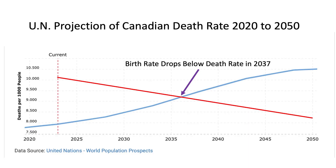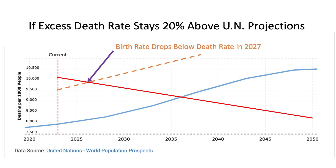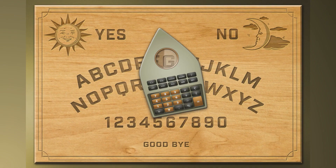Remember when I said if the UN projected death rate was accurate, the death rate would exceed the birth rate in 2037? Assuming the excess death rate stays just 20% higher than the UN projections rather than continuing to increase, the death rate in Canada will exceed the birth rate in 2027, just four years from now. Will the excess death rate be greater than 20% for 2023? You might as well ask the Ouija board.